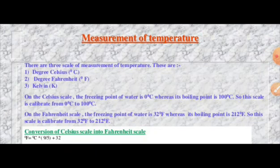On the Fahrenheit scale, the freezing point of water is 32 degree Fahrenheit, whereas its boiling point is 212 degree Fahrenheit. So this scale is calibrated from 32 degree Fahrenheit to 212 degree Fahrenheit. The formula used for conversion of temperature from Celsius scale to Fahrenheit scale is: degree Fahrenheit equals degree Celsius multiplied by 9 by 5, plus 32.